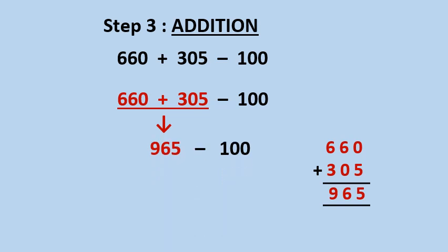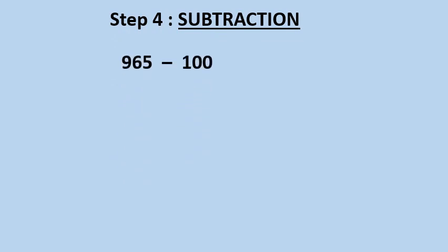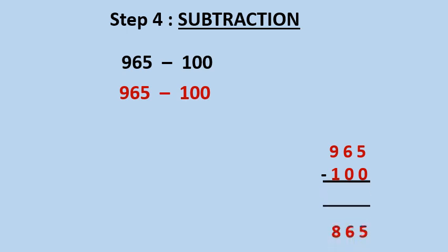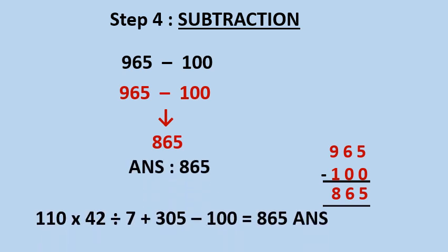Now the question left is 965 minus 100. Step number 4 is subtraction. Now we subtract 100 from 965. When we subtract 100 from 965, the answer is 865. We write 865 in place of 965 minus 100. The answer of this question — 110 multiply by 42 divide by 7 plus 305 minus 100 — is equal to 865.